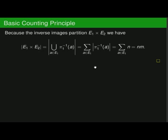The inverse images partition E1 cross E2. The union of all of our preimages equals E1 cross E2, and all of the pairwise intersections are empty. So if we add up all of the cardinalities of the preimage sets, we get the total cardinality of E1 cross E2. The cardinality of each preimage set is N, and we've got one preimage set for every element in E1, so we're adding N a total of M times, which gives us a cardinality of N times M.